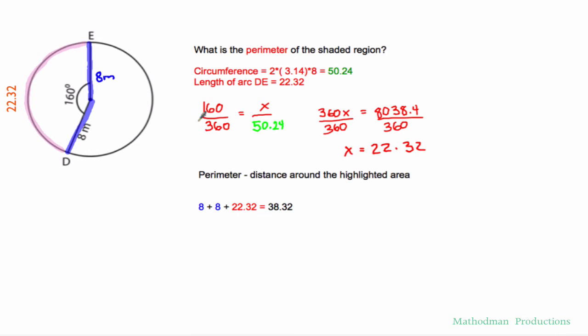...the central angle is 160. Put that over 360, which is the whole circle. And then x, I don't know what the arc length is. And 50.24 is the circumference of the whole circle. 360 matches up with 50.24. 160 is what opens up to that arc length. Cross multiply 360 times x. 160 times 50.24 gives me 8,038.4. And then just divide both sides by 360. And you get the measure of that arc length. X equals 22.32.